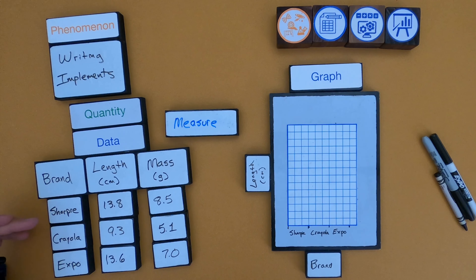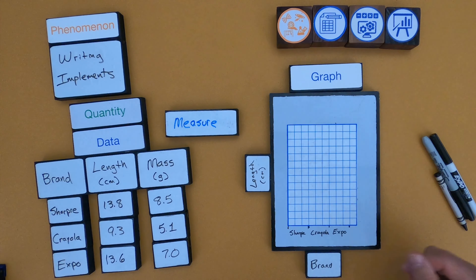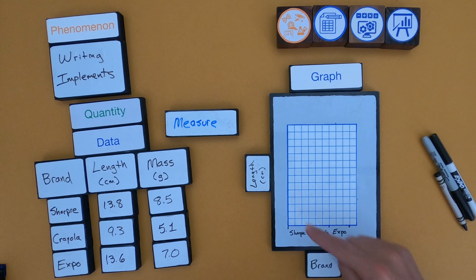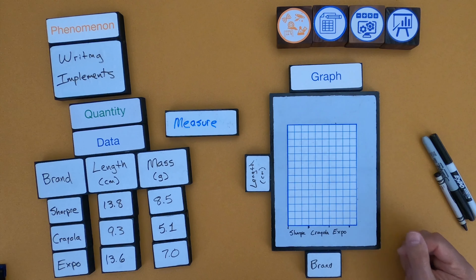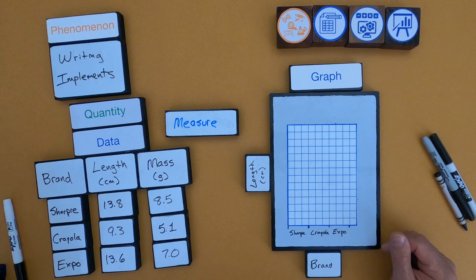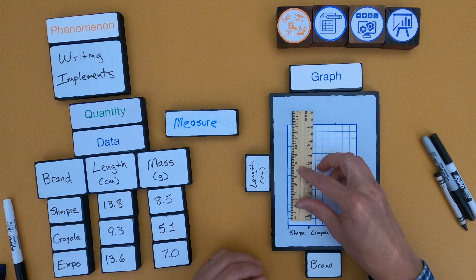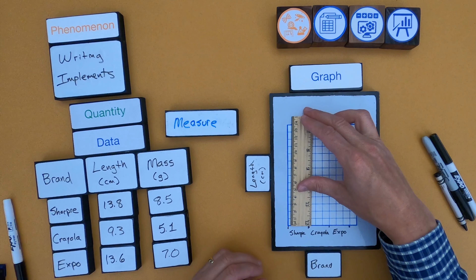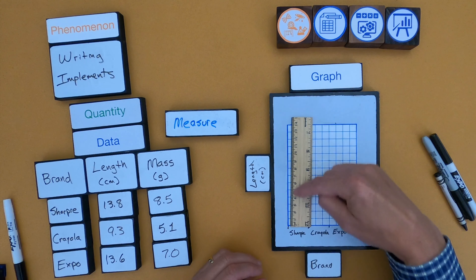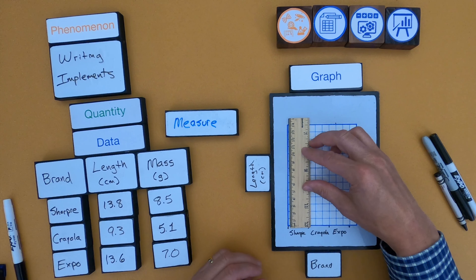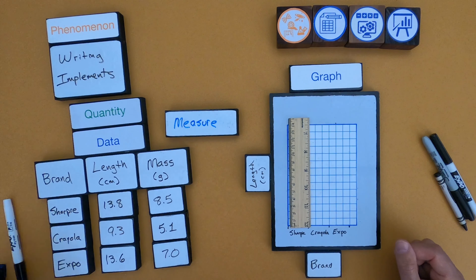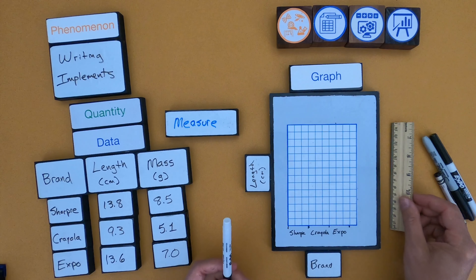Since these are different things — Sharpie, Crayola, Expo — a bar graph would be the easiest way to do that. The next thing I want to do is figure out the scale on the side. Since this is one-centimeter graph paper, each square represents one centimeter, so I can just mark the scale accordingly. I'm showing the length on the left side; you don't want to mark all points, just the big ones.